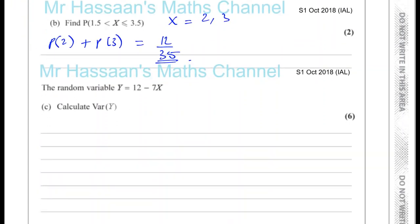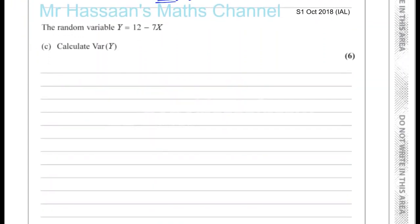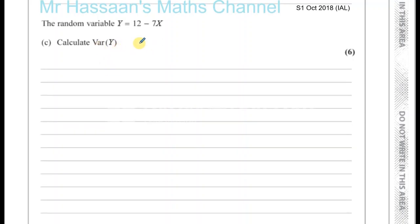Then it says, a random variable Y equals 12 minus 7X. Calculate the variance of Y. Now if Y equals 12 minus 7X, if Y is the same thing as 12 minus 7X, then the variance of Y will be the same as the variance of 12 minus 7X, because they're the same thing. Now how do I deal with the variance of something like this, which is something which is transformed, which has a linear kind of coding?